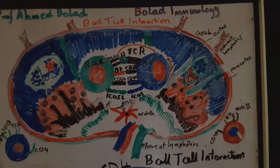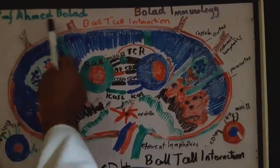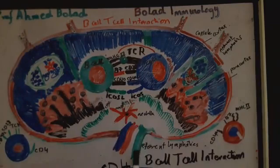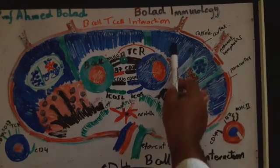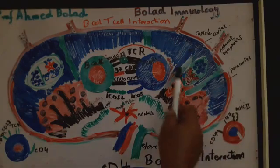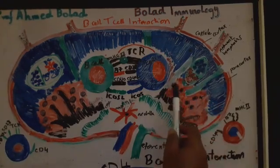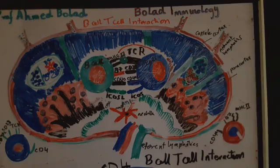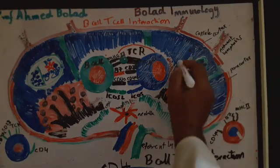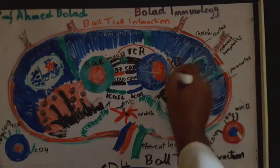This lymph node has several afferent lymphatics and a single efferent lymphatic, and this is the medulla. The area in blue is the cortical or B-cell area, and the area in red is the T-cell-rich paracortical area. Naive B-cells and naive T-cells from the bone marrow enter secondary lymphoid organs through high endothelial venules.